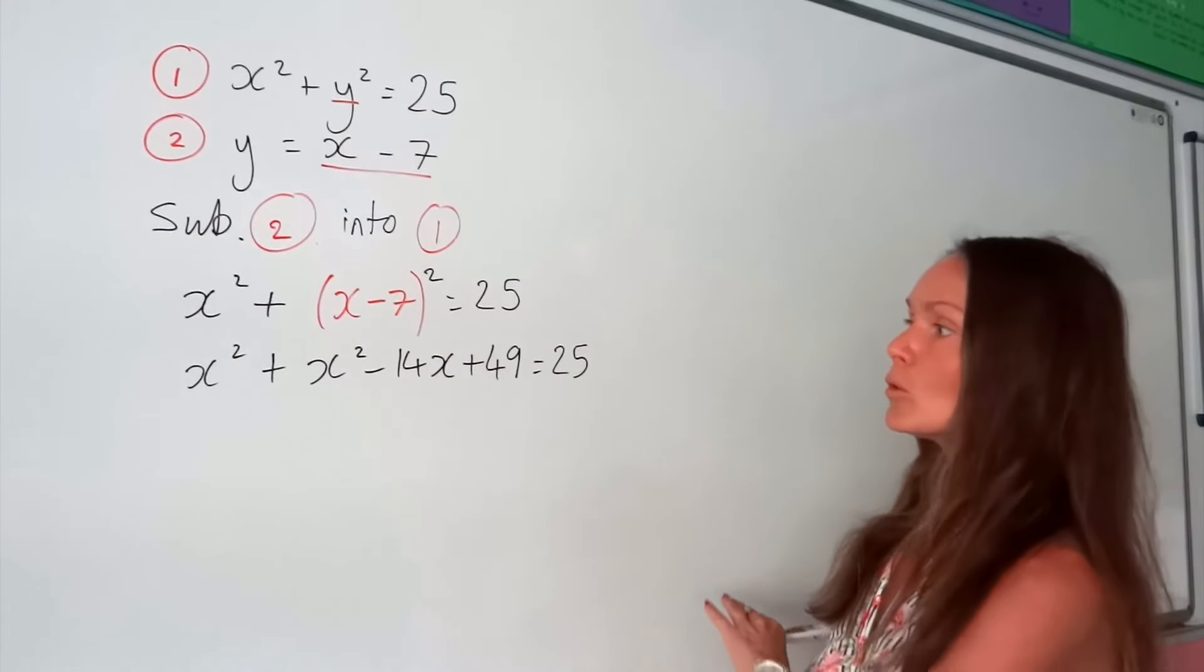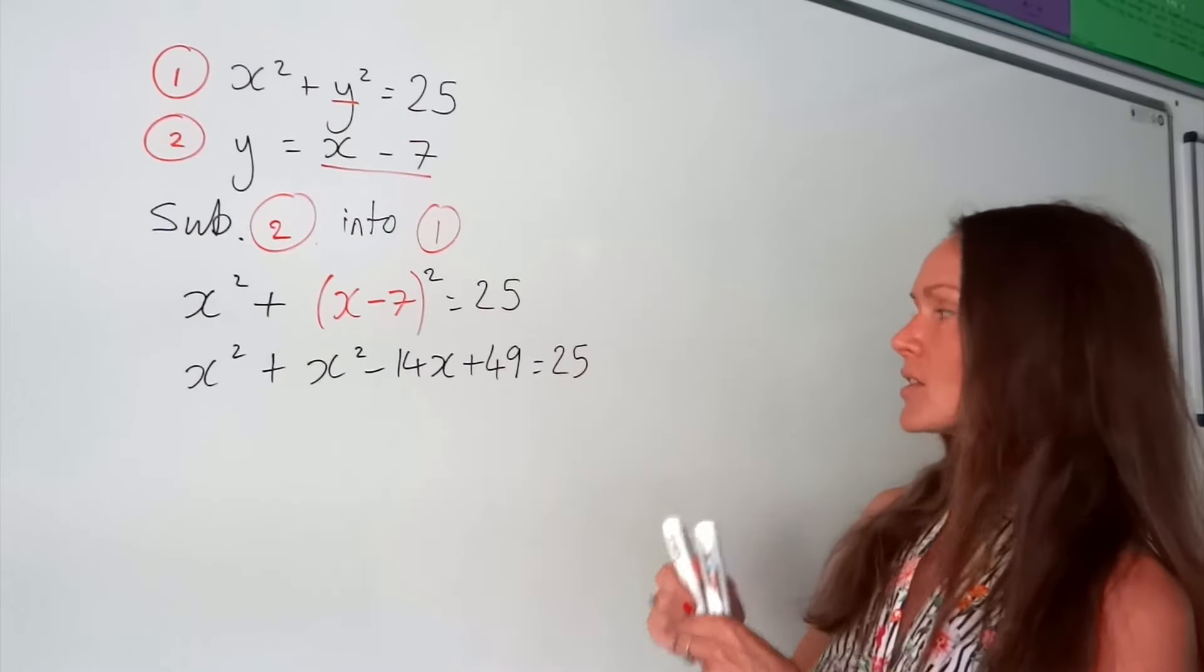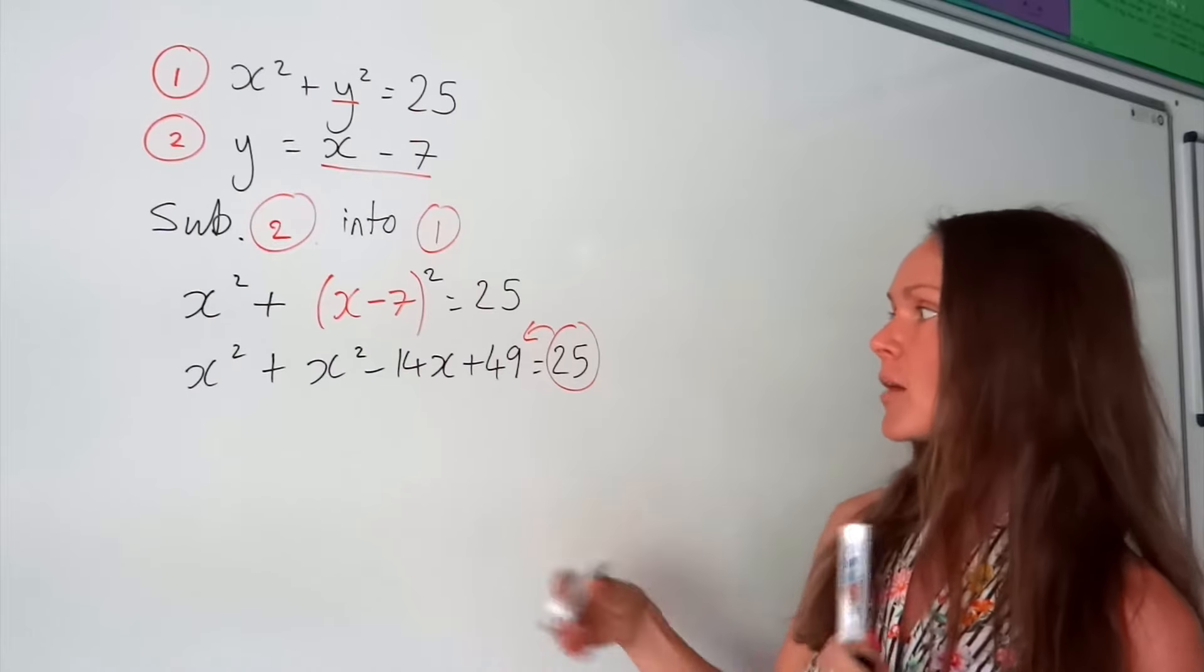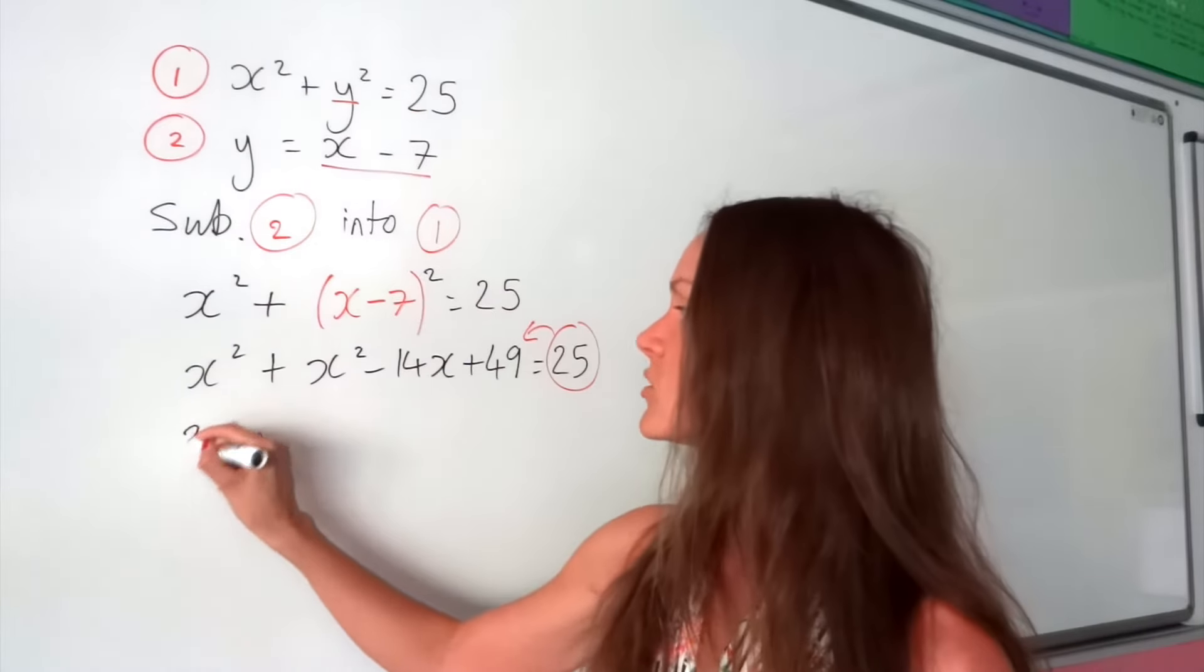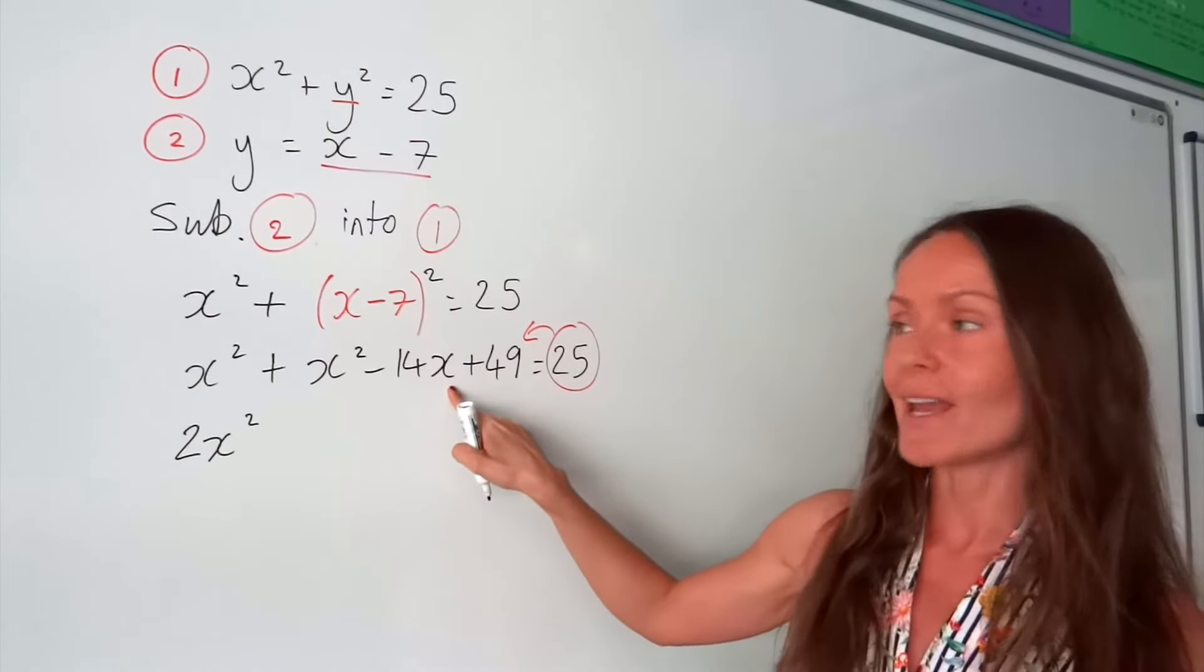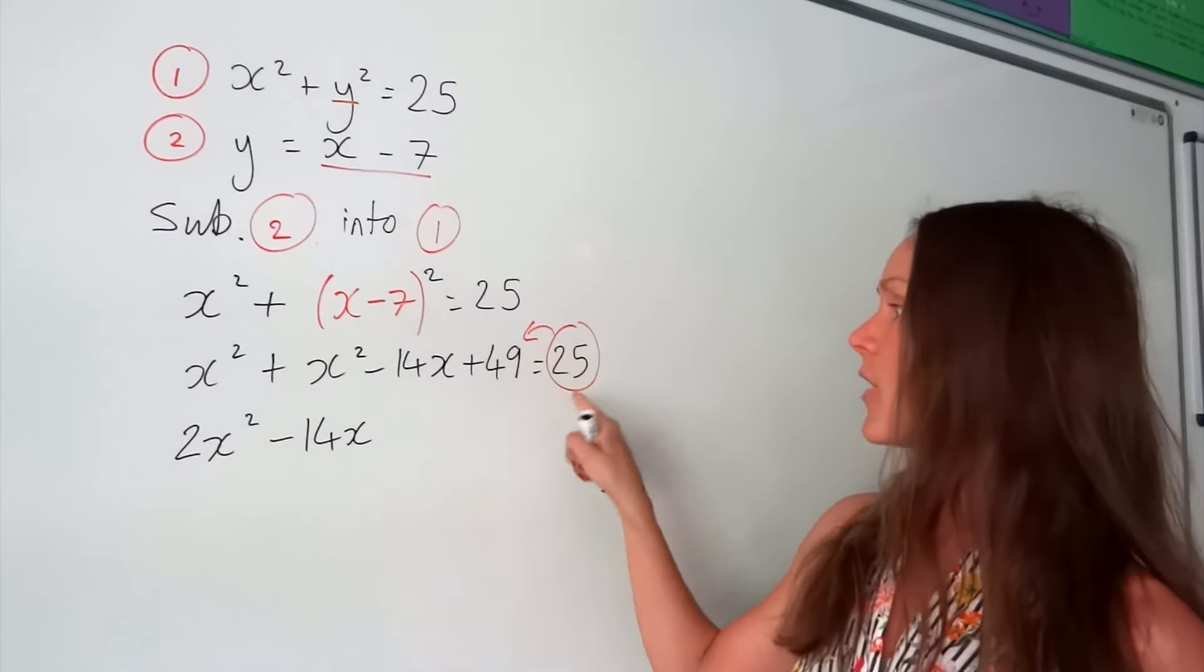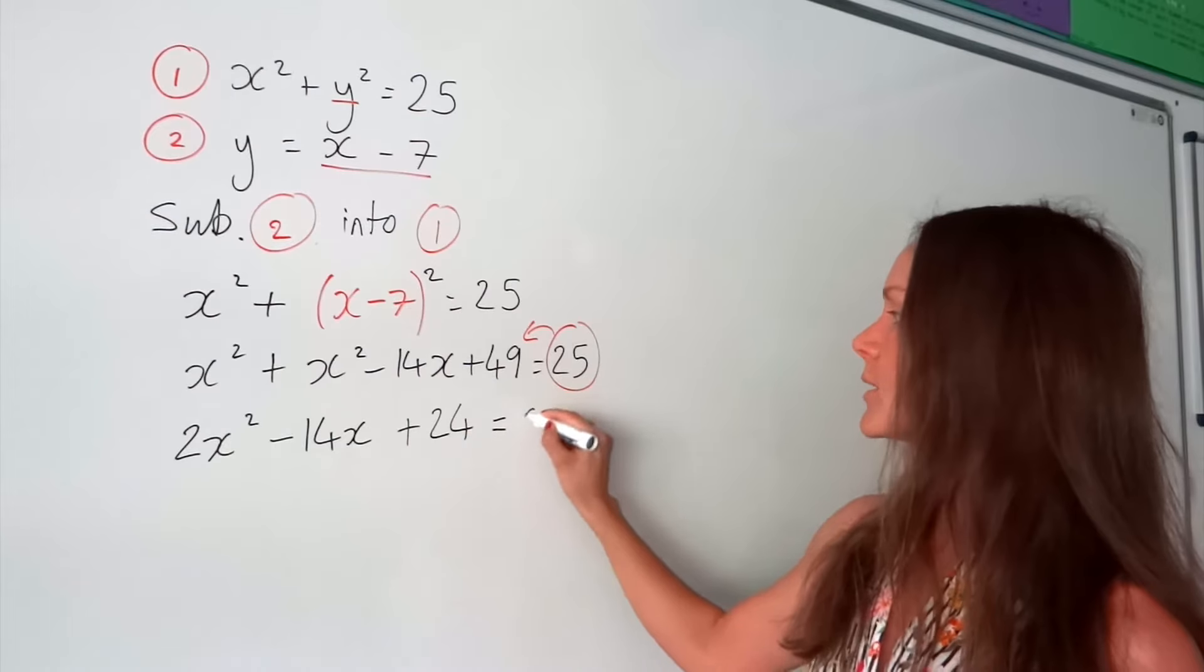Now I'm going to move all the terms onto one side of the equation so that it says equals 0. So I need to move that 25 over to the left so it changes to a negative. And at the same time, I'm going to tidy everything else up. So I've got 1x squared plus 1x squared, which is 2x squared. This doesn't change because it's the only x term. And then I've got positive 49 minus 25, which is 24, equals 0.